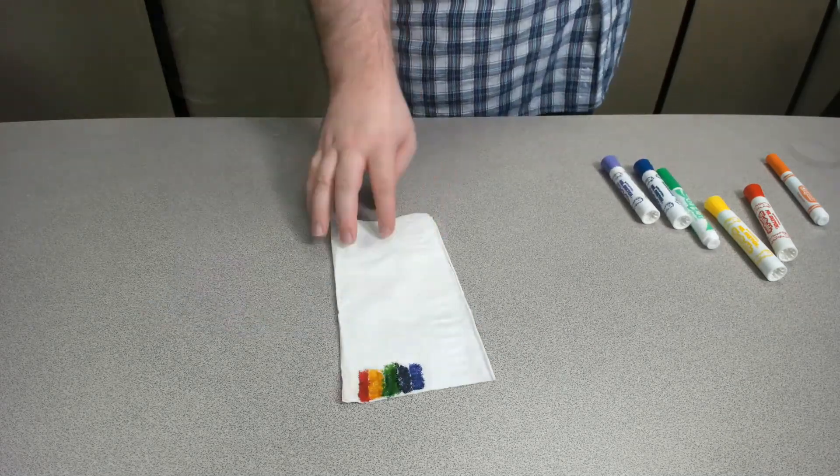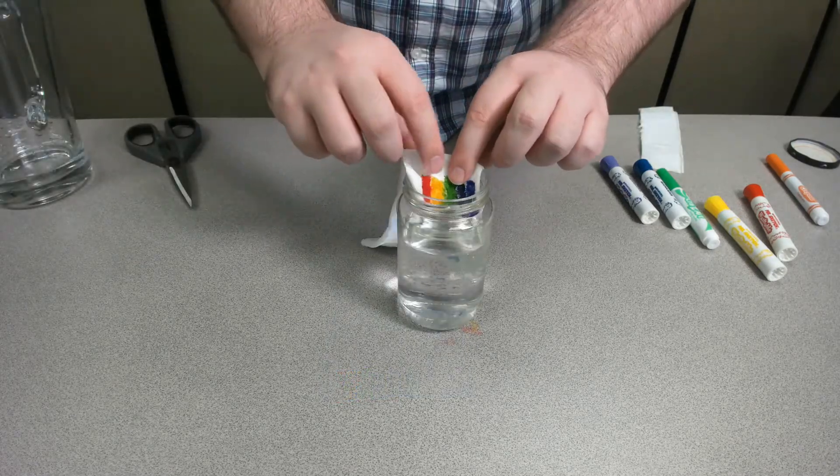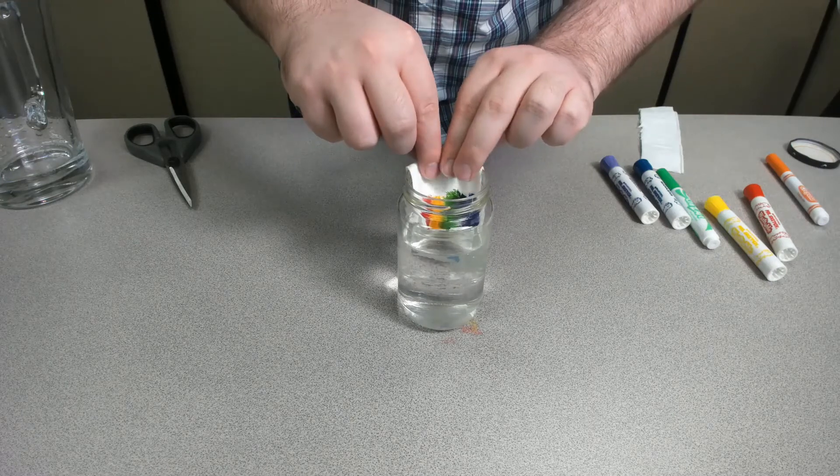Once finished, we are grabbing a glass and filling it with water, then dropping our rainbow into the glass, letting the edge of the napkin or paper towel sit just barely above the surface of the water.